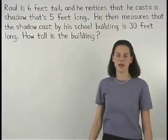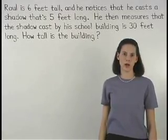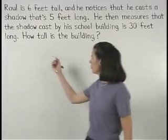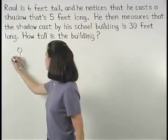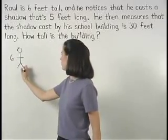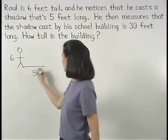In this problem, I would first draw a picture of Raul and his shadow. We know that Raul is six feet tall and he casts a shadow that's five feet long.